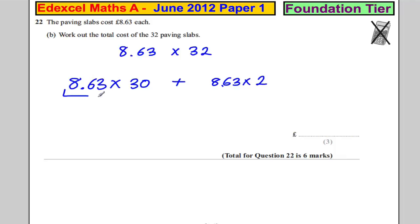Now, how do we work this out here? Well, what we could do is we could, as a side working, we could say, well, what is 8 pounds 63 times 10? Well, that's 86 pound and 30. So 8 pounds 63 times 30, which is 3 times 10, must be 3 times this.